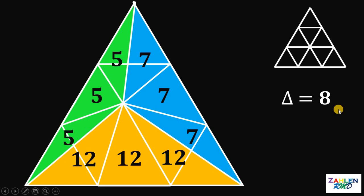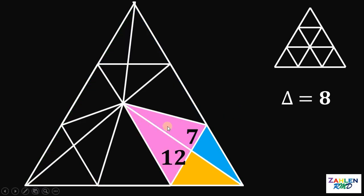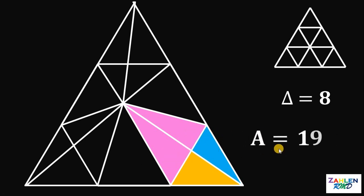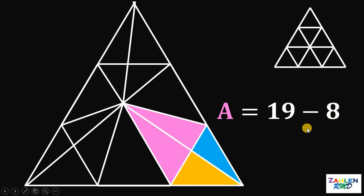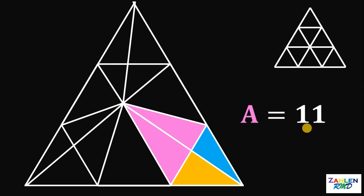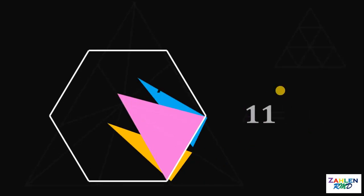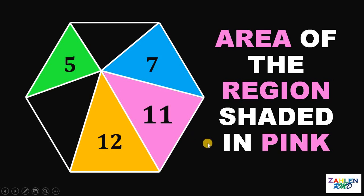Now, how can this information help us answer our problem? Let's go back to our question. Our goal is to find the area of this pink region. Take note that the area of this quadrilateral right here must be equal to 7 plus 12, and 7 plus 12 is 19. So the area of this quadrilateral must be equal to 19 square units. Since we know that the area of this small equilateral triangle is 8 square units, we have 19 minus 8, and we get the area of this pink region, which is equivalent to 11 square units.